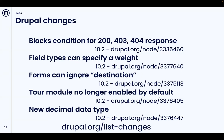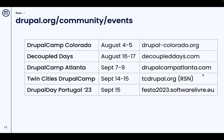As always, go to drupal.org/list-changes to keep track of what's going on in core. DrupalCamp Colorado is the 4th and 5th, which makes that tomorrow on Saturday. The couple of days coming up on the 16th and 17th are all ready to go.